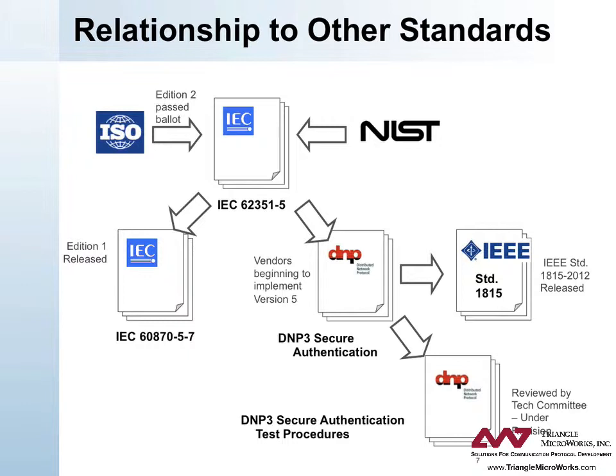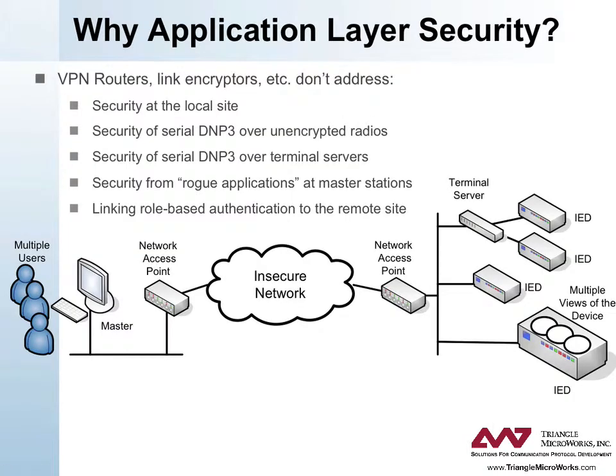IEC 62351-5 is in turn based on International Standards Organization, Internet Engineering Task Force, and U.S. National Institute of Standards and Technology standards. DNP3 is challenging to secure because it can be used in a variety of networks, including radio systems, serial links, and IP-based wide area networks. Furthermore, it is designed so that from one end of the network to the other, it may travel over more than one of these links. For this reason, DNP3 Secure Authentication is included in the topmost of the OSI layers — the application layer.